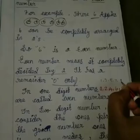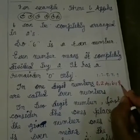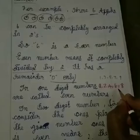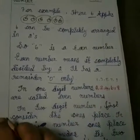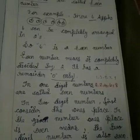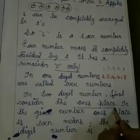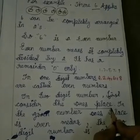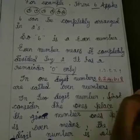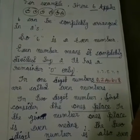Just like we saw one-digit odd numbers — 1, 3, 5, 7, 9 — one-digit numbers also have even numbers: 0, 2, 4, 6, and 8. These are called one-digit even numbers. If you are given a two-digit number and asked to find even numbers, just like with odd numbers, first consider the ones place. If the ones place has 0, 2, 4, 6, or 8, then no matter how many digits the number has, it is called an even number. Consider the ones place only.